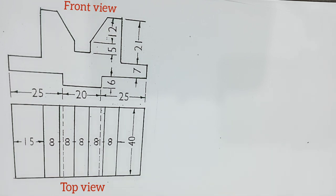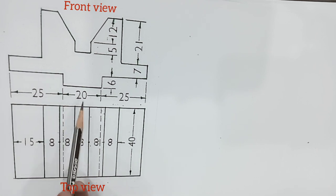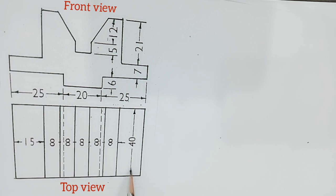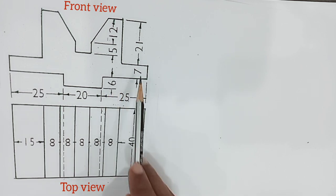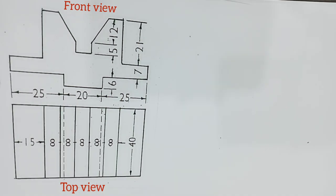Before drawing the isometric view, we have to find the overall length, breadth, and height of the object. The overall length is 25 plus 20 plus 25, which equals 70. The breadth is 40, and the overall height is 6 plus 7 plus 21, which equals 34. So the dimensions are 70 by 40 by 34.